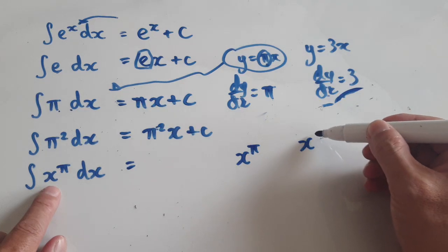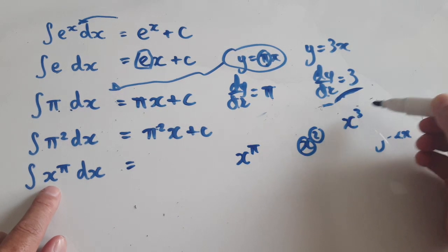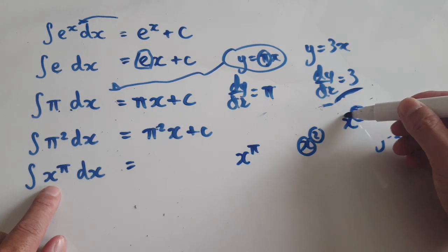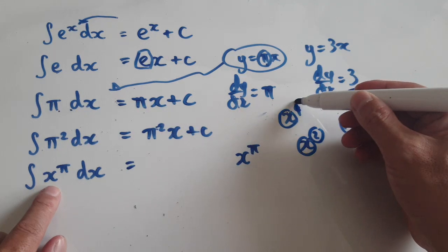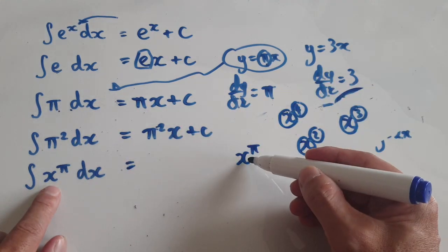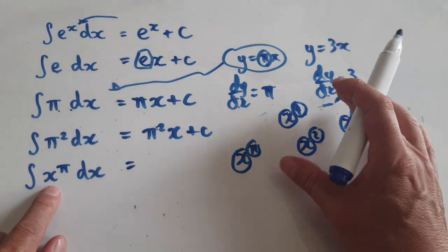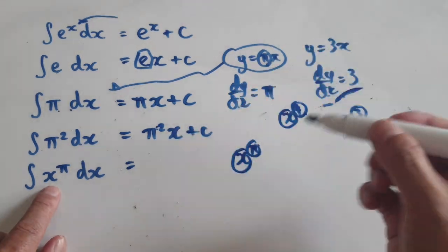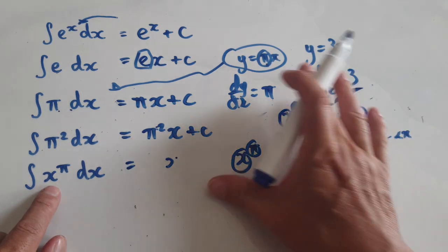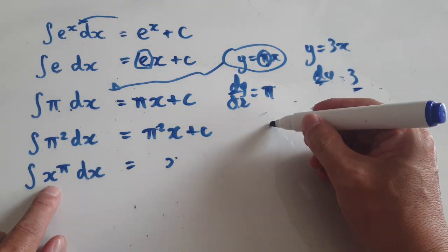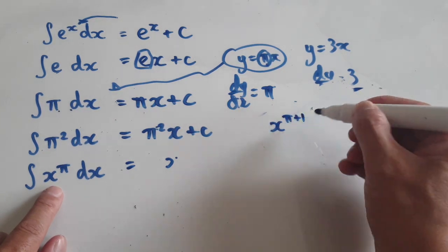Just like x squared, x to the power of 3, x to the power of 4 — in each case the base is a variable and the power is a constant. x to the power of pi is the same: variable base, constant power. So when you integrate it, it would be one notch higher — something along the lines of x to the power of pi plus one.